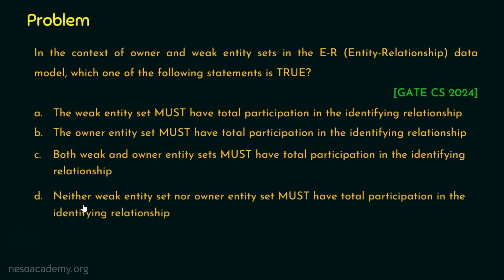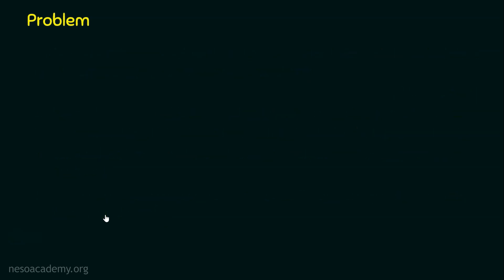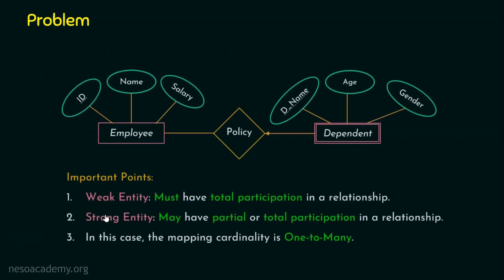And option D: neither weak entity set nor owner entity set must have total participation in the Identifying Relationship. I request you to pause this video for a while and analyze all the options provided. In order to identify the right answer, I'm going to show you an example scenario.